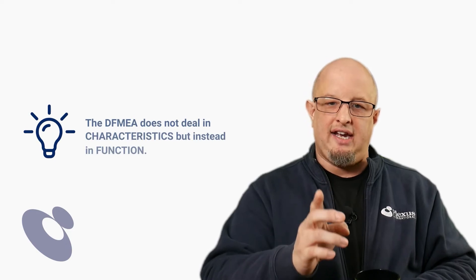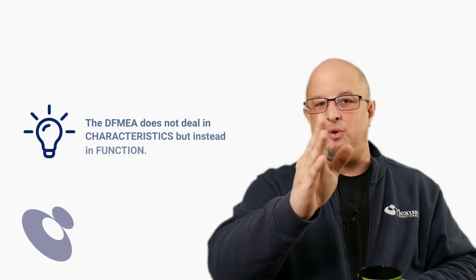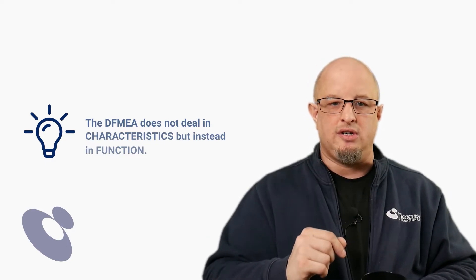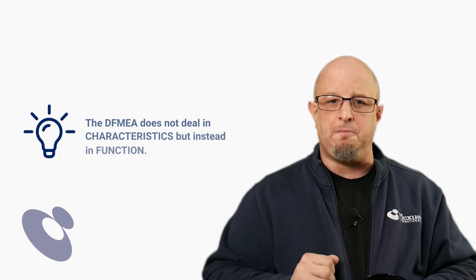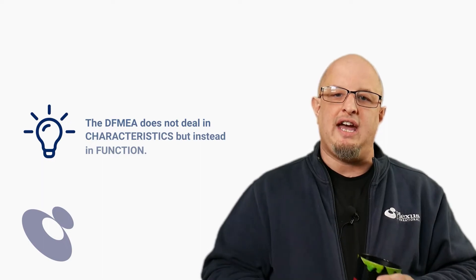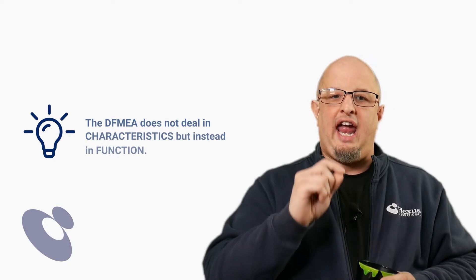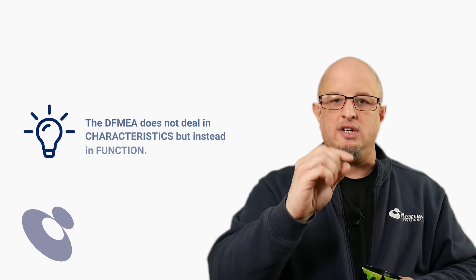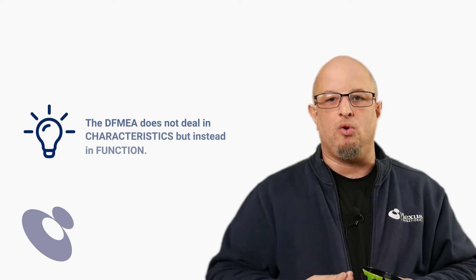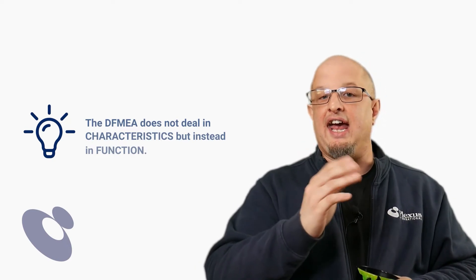Summarizing this simply: the DFMEA doesn't directly deal in characteristics. There are some characteristics that do arrive on the DFMEA, but to keep it simple, think of the DFMEA as dealing in important functions. For designers, every characteristic you put on the print to fulfill that function then becomes important. That is the linkage between special characteristics and the DFMEA.